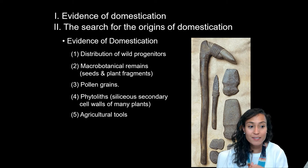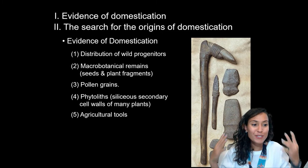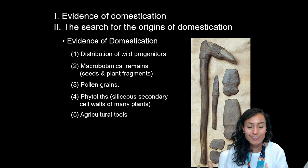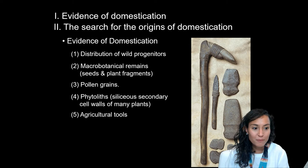In addition to phytoliths, pollen, and macro-botanicals, we also have the straightforward material culture associated with the development of agriculture — agricultural tools which developed in response to domestication. These include threshing sledges, large groundstones for digging, knives for cutting, and all sorts of implements like these.